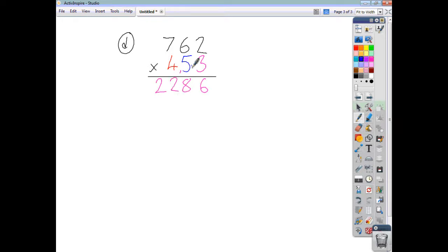Now the 5 represents 50, so you add a 0. Then you're ready to multiply by 5. 5 twos are 10. 5 sixes are 30. Add the 1, 31. 5 sevens, 35. Add the 3, 38.